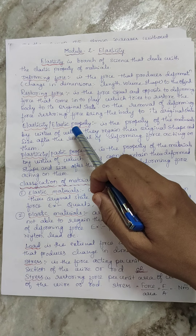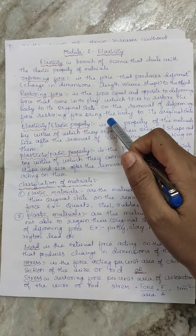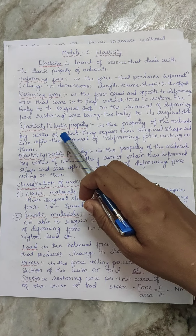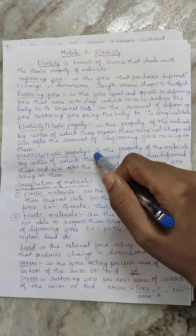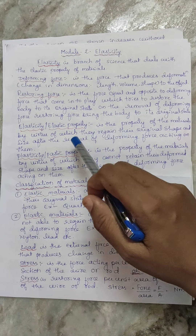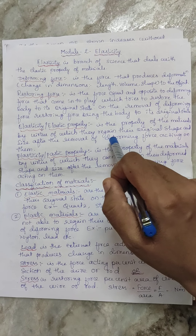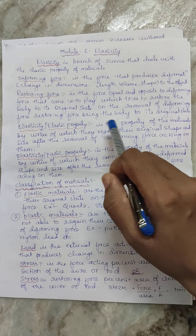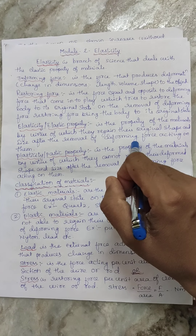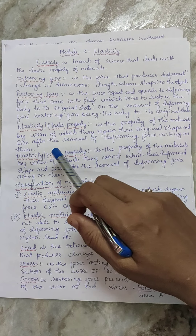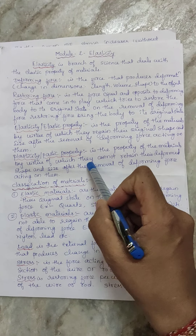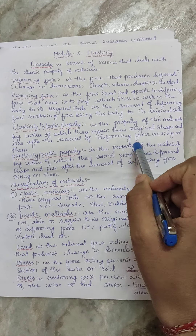Restoring force restores the body to its original state when you remove the deforming force. Elasticity, or elastic property, is the property of the material by virtue of which the body regains its original shape and size when you remove the deforming force. Similarly, plasticity, called plastic property, is the property of the material.